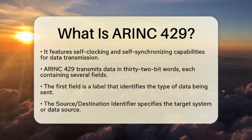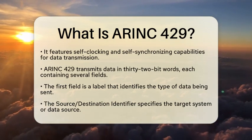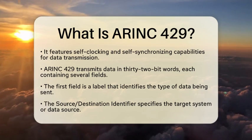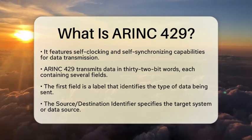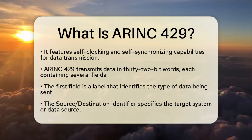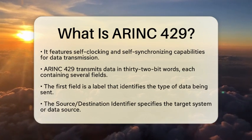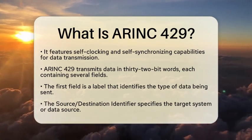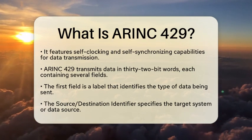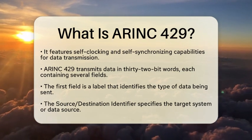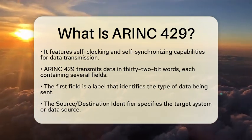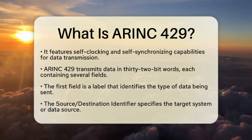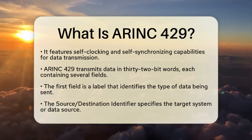Now let's break down how ARINC-429 works. It transmits data in 32-bit words. Each word contains several fields. The first field is the label, which identifies the type of data being sent. Next is the source destination identifier, which specifies the target system or data source. The data field contains the actual information, such as altitude, speed, or heading. The sign status matrix indicates data validity and provides error detection.